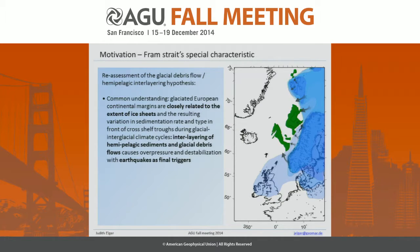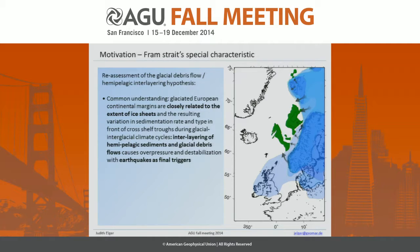We have a very special sedimentation type and sedimentation rate. We have hemipelagic sedimentation in between the ice ages, and after the ice ages we have a very high sedimentation rate and fast sedimentation of glacial debris flows. Because of this interlayering, we can get overpressure in the pores, which can destabilize the margin. You can see in the image that this fits very well to most of the large landslides on the glaciated European margin.